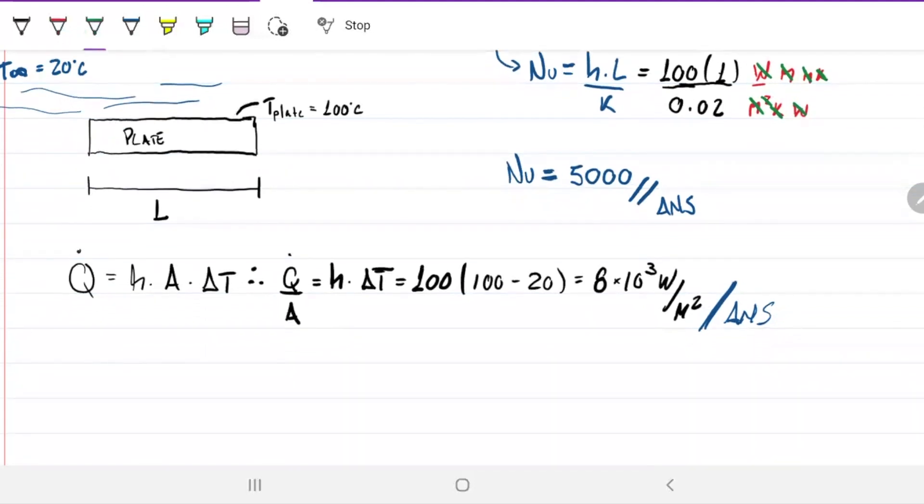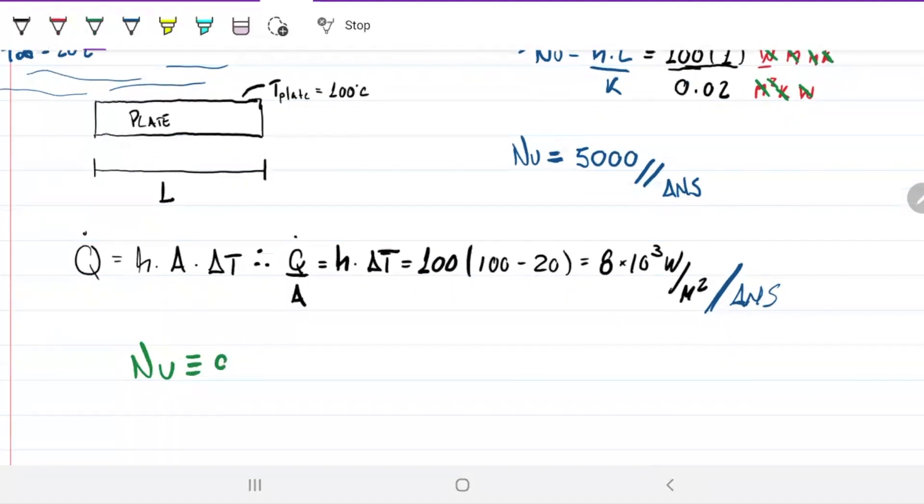Let's finish off the video with that, because the Nusselt number is actually defined as the ratio between Q for convection and Q for conduction. So if we have a Nusselt number of 5,000, it indicates, because of this, it indicates...